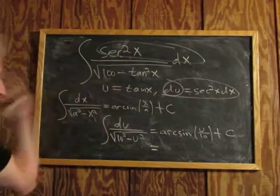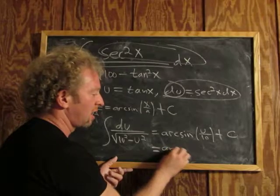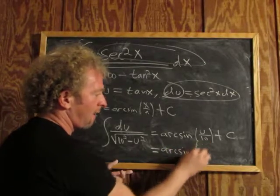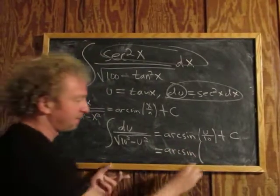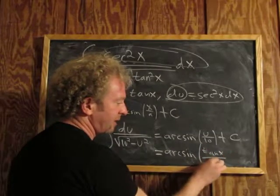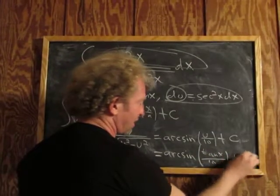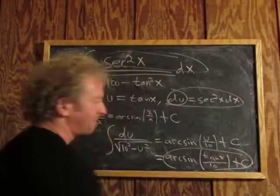And then, so u was tan x. So we just get arc sine of u, which is tan x over 10, plus our constant c. That's it. Hope that made sense.